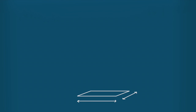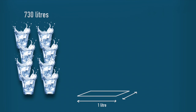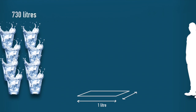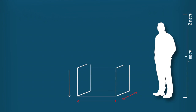One millimeter of rainfall collected over a meter squared is one liter of water. If one person were to drink the recommended eight glasses a day, that would be 730 liters in an entire year. So if one person had a tank a meter squared by at least 73 centimeters high, they could be completely self-sufficient with their drinking water.